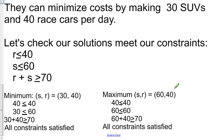Let's check our maximum of 60, 40. Is 40 less than or equal to 40? Yes. Is 60 less than or equal to 60? Yes. Is 60 plus 40 greater than or equal to 70? Yes. So all of our constraints have been satisfied. So these are our minimum and maximum points for this question.